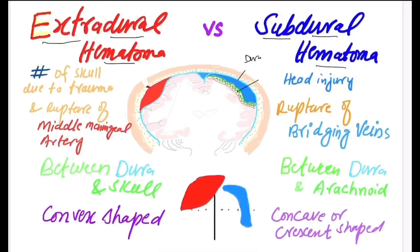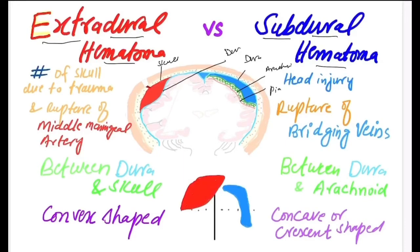This is the arachnoid mater and this is the pia mater. So collection of blood between the dura and arachnoid mater is the subdural hematoma, and collection of blood between the skull and dura mater is the extradural hematoma.